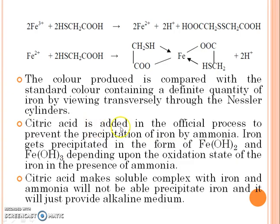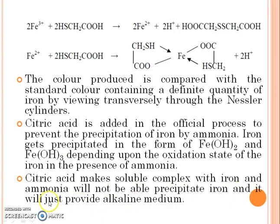Citric acid is added in the official process to prevent the precipitation of iron by ammonia. Iron gets precipitated in the form of ferrous hydroxide and ferric hydroxide, depending upon the oxidation state of iron, in the presence of ammonia. Citric acid forms a soluble complex with iron so that ammonia will not precipitate iron and will just provide the alkaline medium.